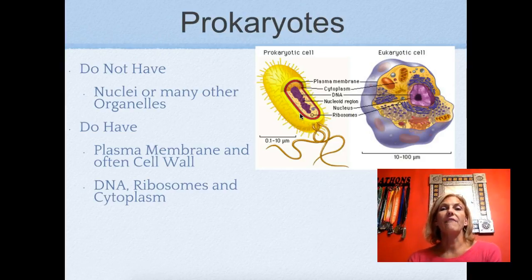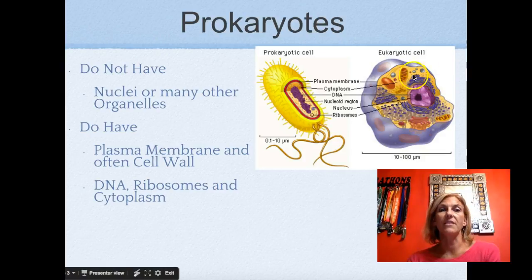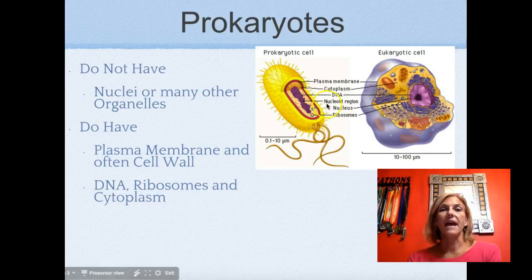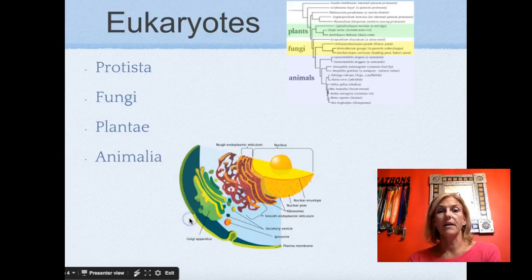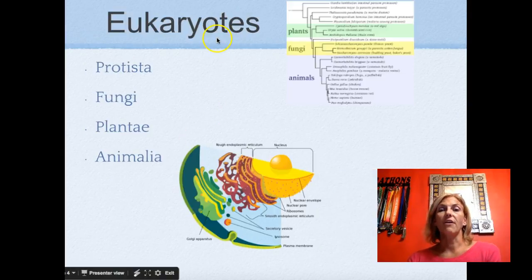Prokaryotes don't have other structures that we typically think of as being in the eukaryotic cell. They have DNA — it's just not in a nucleus — and they have ribosomes, cytoplasm, and a cell membrane. Those things are similar to our cells, but they're missing a whole lot of other things.